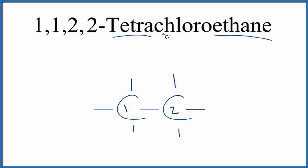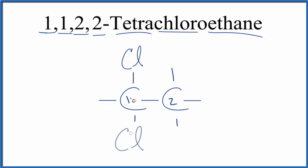So tetra means four. We're going to have four chlorine atoms. These numbers show which carbon we'll find them on. Let's put a chlorine atom on the first carbon right here, and then another one. We could put it anywhere since this bond rotates. Then on the second carbon, we have a chlorine here and we'll put it down here again.